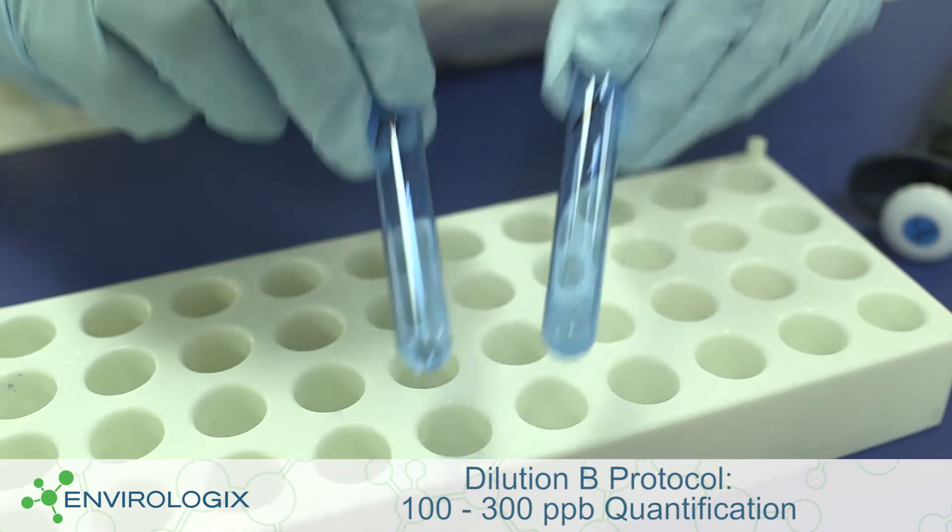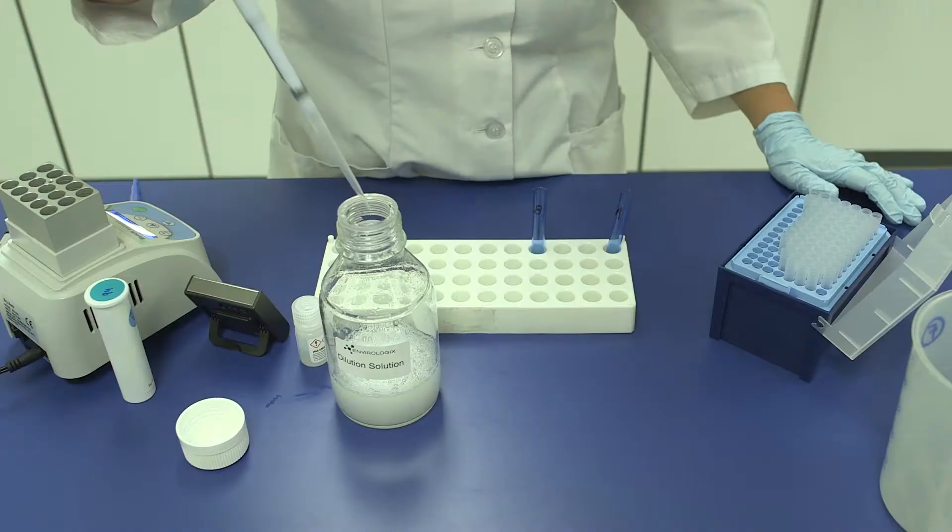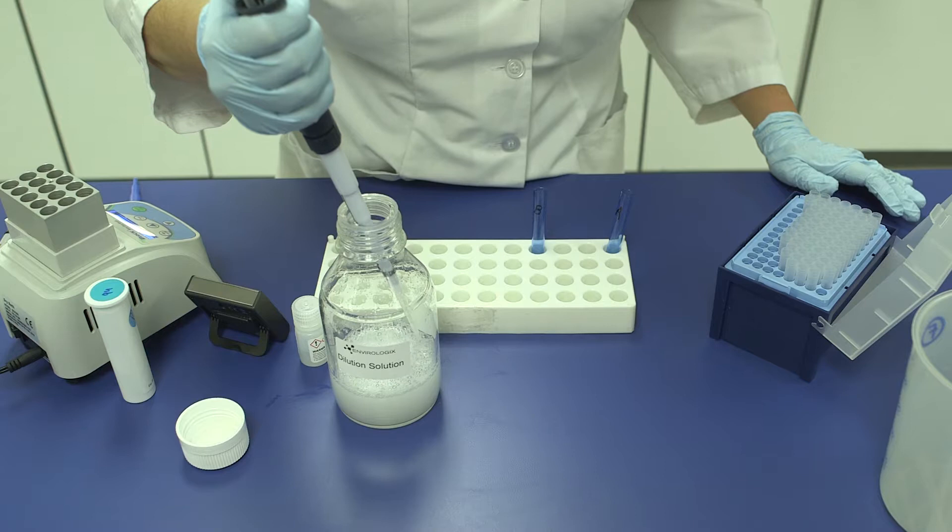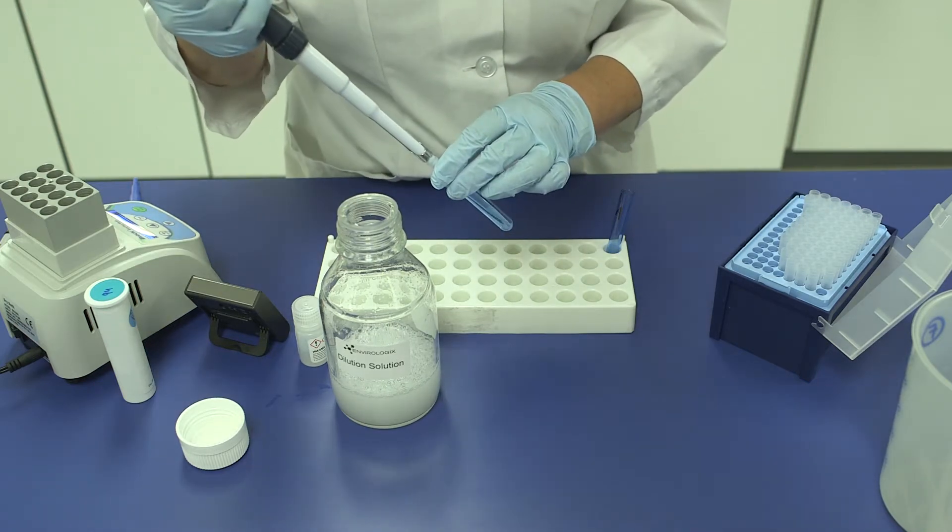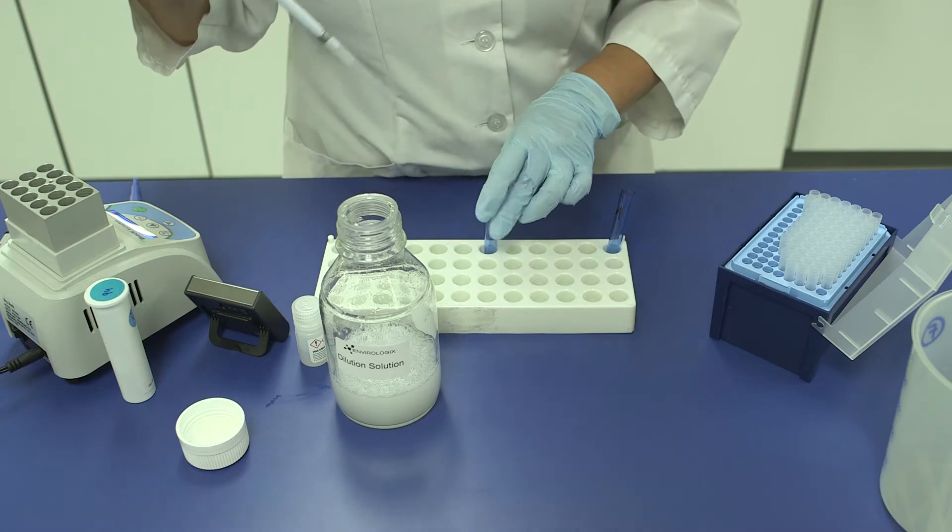Dilution B, Step 1. Add 200 microliters of well-mixed dilution solution and 100 microliters of the dilution A extract to a clean tube and mix well.